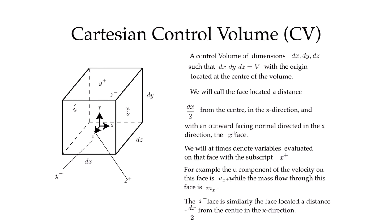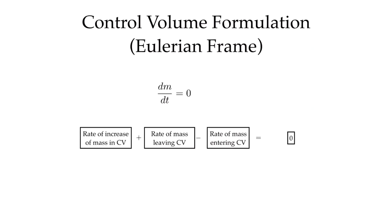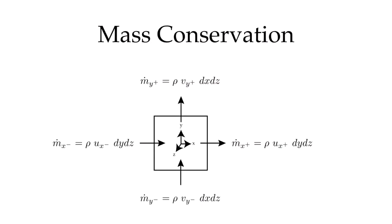Now let's use this control volume to put together the differential conservation of mass equation in the Eulerian frame of reference. For a fixed mass, dm/dt = 0. Translated to the control volume formulation, the rate of increase of mass in the control volume, plus the rate of mass leaving, minus the rate of mass entering the control volume is equal to zero. Let's start to put expressions to this.